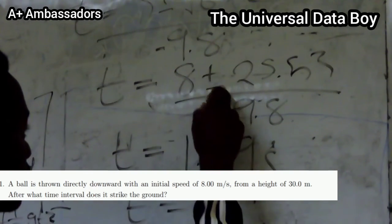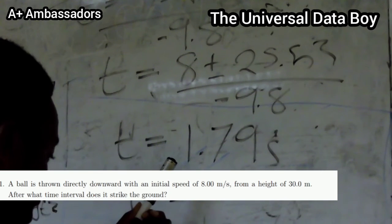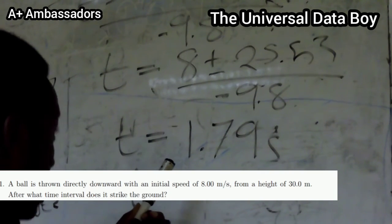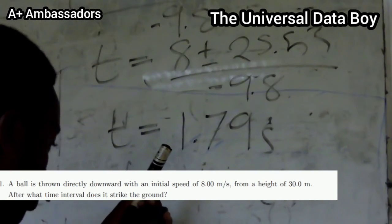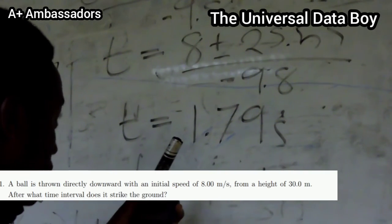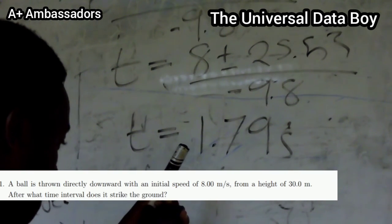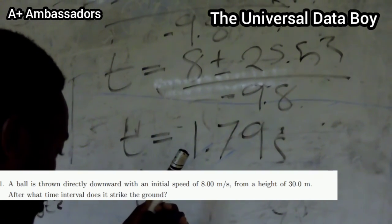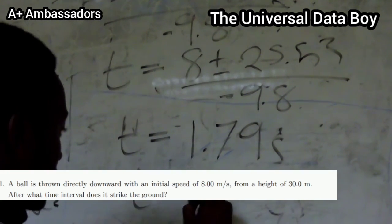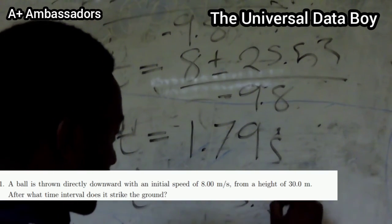When we use the positive, we are going to have (8 + 25.53) / -9.8. We are going to have -3.42.